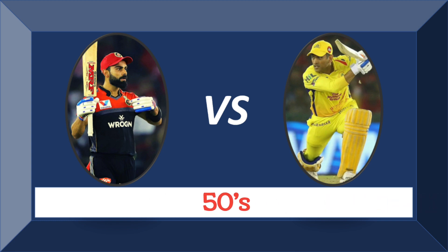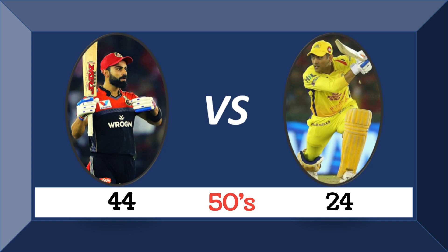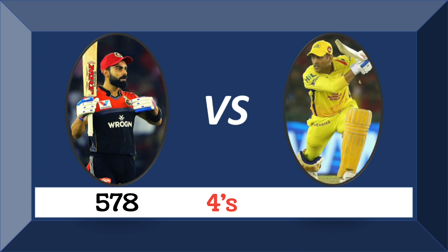Total half centuries: Kohli has 44 half centuries, Dhoni has 24 half centuries. Fours: Virat Kohli scored 578 fours, MS Dhoni has 346 fours.